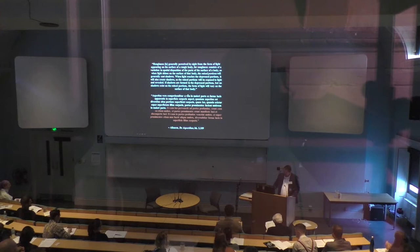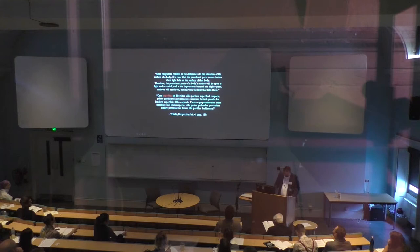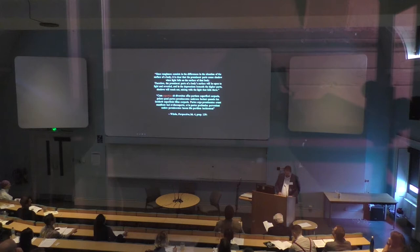In Proposition 139, Vitello argued: 'Since roughness consists in the differences in the situation of the surface of the body, it is clear that the prominent parts cause shadow when light falls on the surface of that body. Therefore, the prominent parts of the body's surface will be open to light and revealed, and in the depressions beneath the higher parts, shadows will reach out, mixing with the light that falls there.'